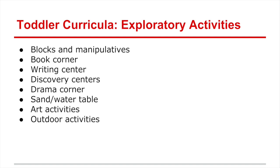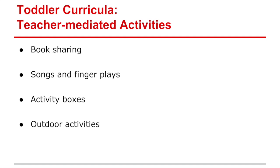In terms of exploratory activities for toddlers, there are many opportunities — sensory motor activities, blocks and manipulatives, a book corner, writing centers, discovery centers, a drama corner, sand and water tables, art activities, and outdoor activities. Essentially, we're building in these different places and spaces so students understand that different types of learning occur in different sections. This aligns with routines — students know there are different expectations for how to act, think, and work in each area.